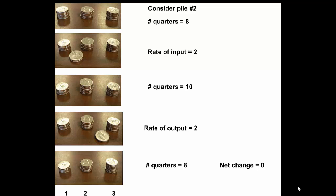If we take an input of two quarters coming from the first pile, for a moment when those are added to pile number two, there's ten quarters. We take two out, we have a rate of output of two. We end up with eight quarters again, so the net change is zero, even though we've moved material through it.